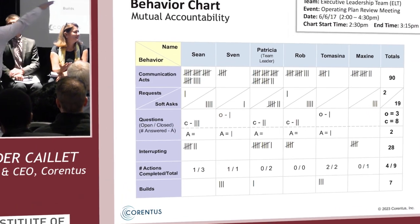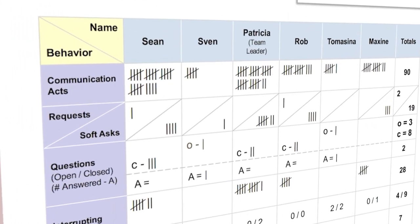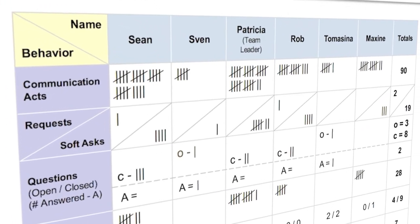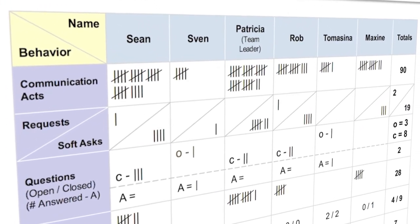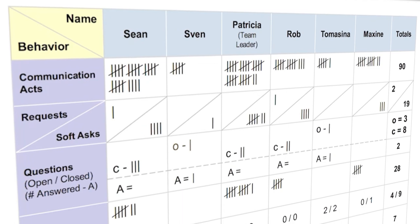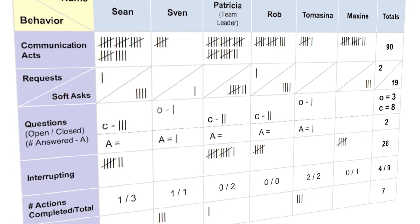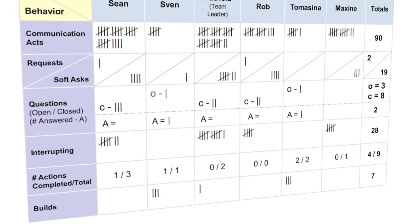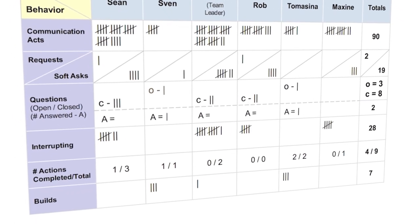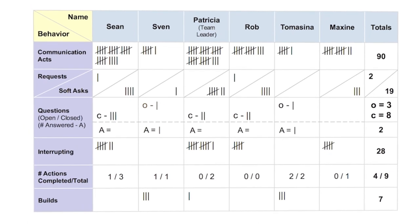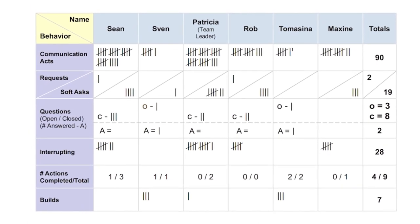You put the names of the people on top, you put the behaviors on the left, and every time they do one you put a tick mark. The top row is communication acts — they all get one every time they say a sentence or more. Then you can qualify it as a request or soft ask, a question, a question that was answered, interrupting, etc.